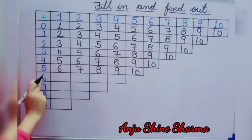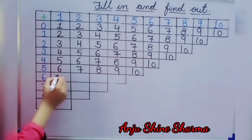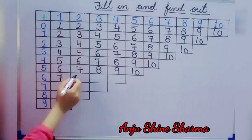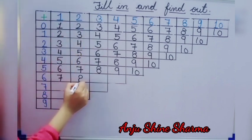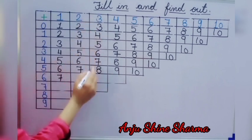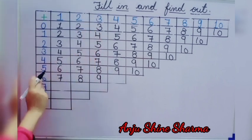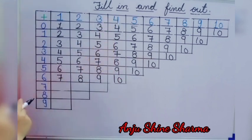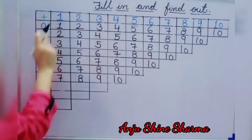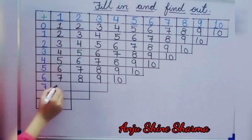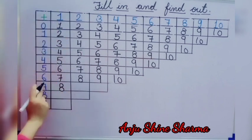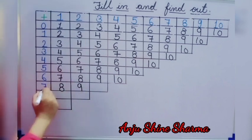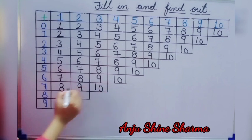Next number is 6. 6 plus 6 is equal to 7. 6 plus 6 is equal to 8. 6 plus 6 is equal to 9. 6 plus 4 is equal to 10. Next we add 7. 7 plus 7 is equal to 10.